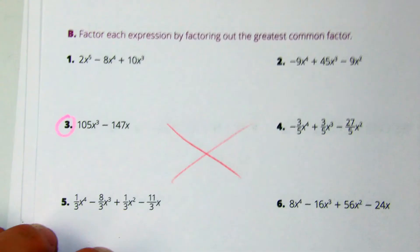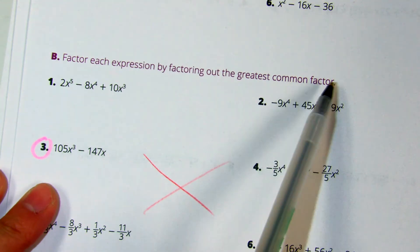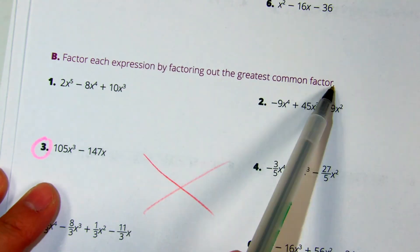All right, in question B3, it tells you to factor each expression by factoring out the greatest common factor. Now, this hint right here won't be on your quiz tomorrow.